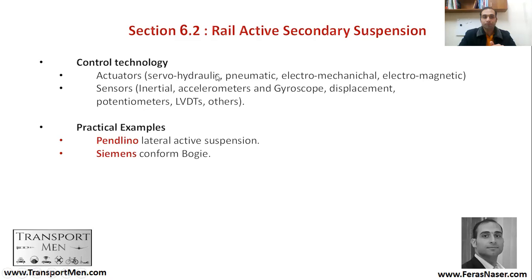The actuators used in active suspension can be servo-hydraulic, motor pneumatic, electromechanical, or electromagnetic. Sensors include inertial accelerometers, gyroscopes, and other types. Based on the readings from these sensors, the actuators act accordingly. A practical example is the Pendolino, which has a lateral active suspension, and Siemens, which has a conformed bogie.